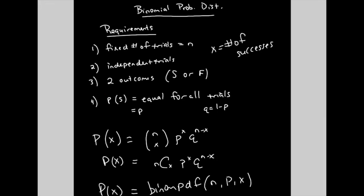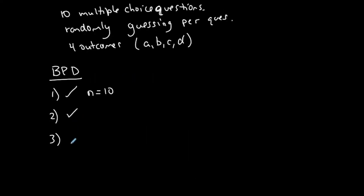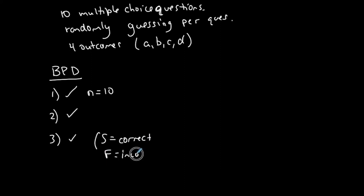The third requirement is two outcomes: success or failure. Do we have two outcomes? Yes — I'm either going to get the answer right or wrong. So success is defined as the correct answer and failure is the incorrect answer. Always define your success and failure before continuing.